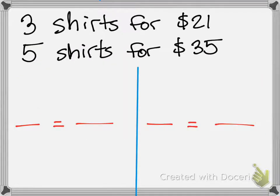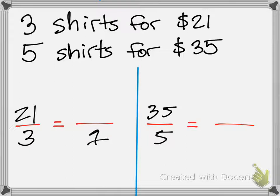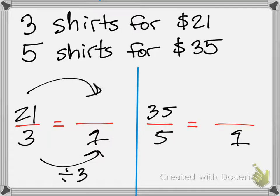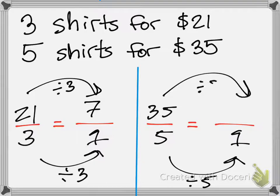Next: $21 for 3 shirts and $35 for 5 shirts. I want to find out how much each one shirt costs, so I divide by 3 and get 7 over 1. Then I divide the second ratio by 5 and also get 7 over 1. Are these equivalent ratios? Yes!